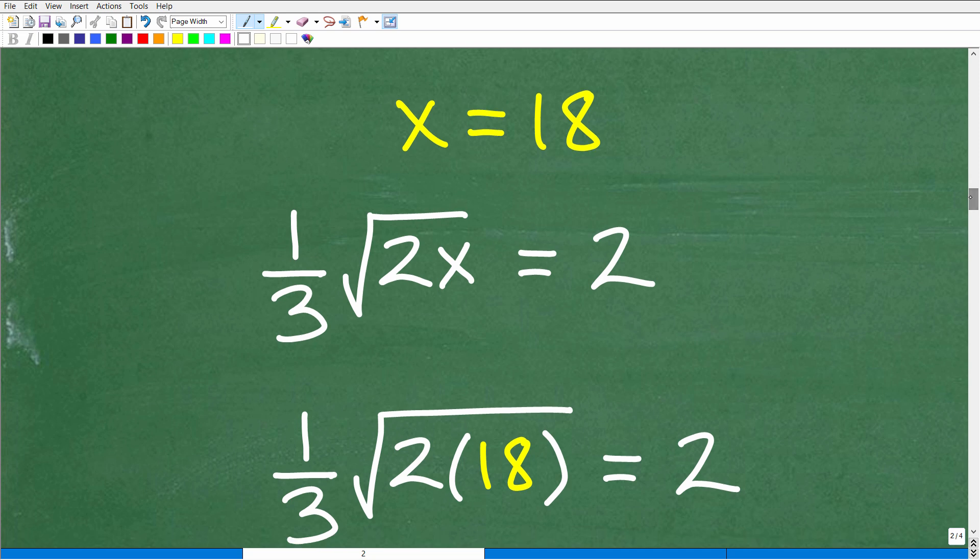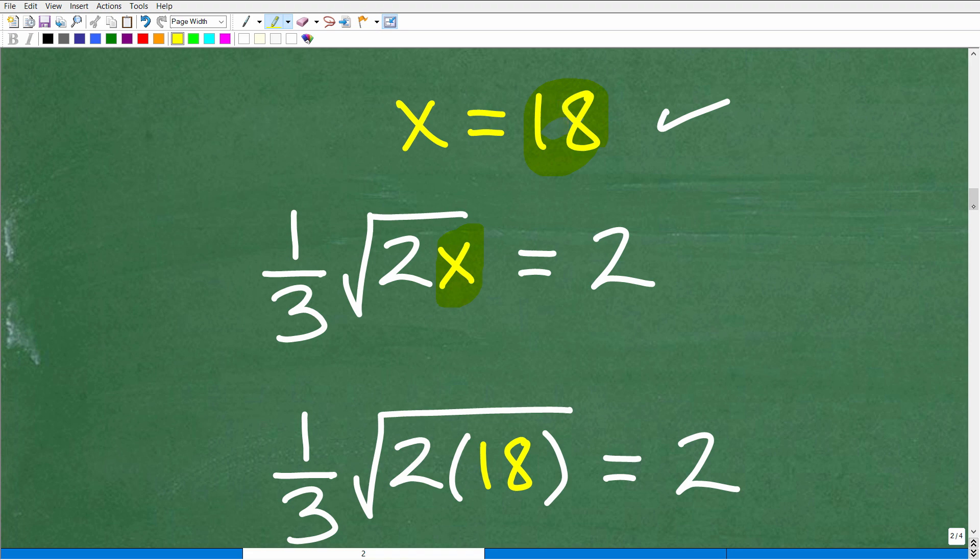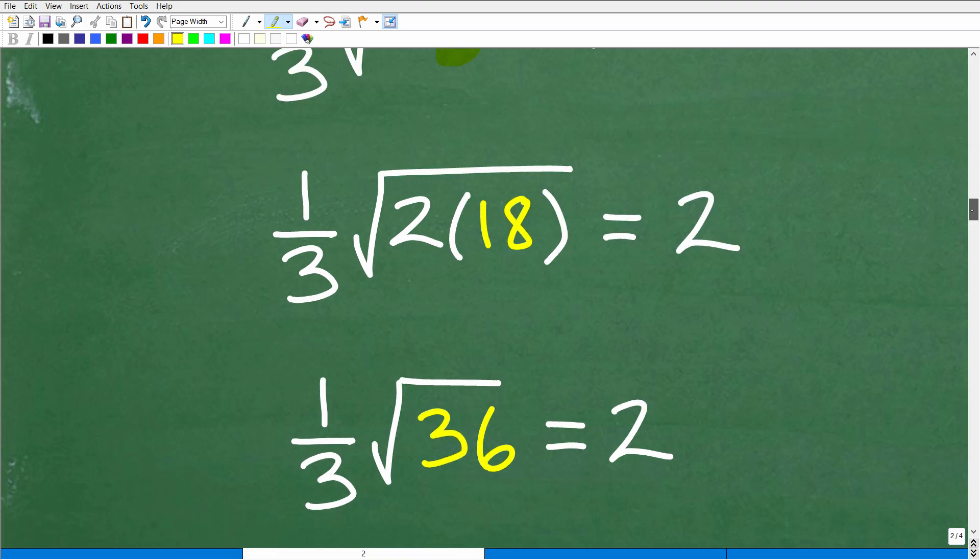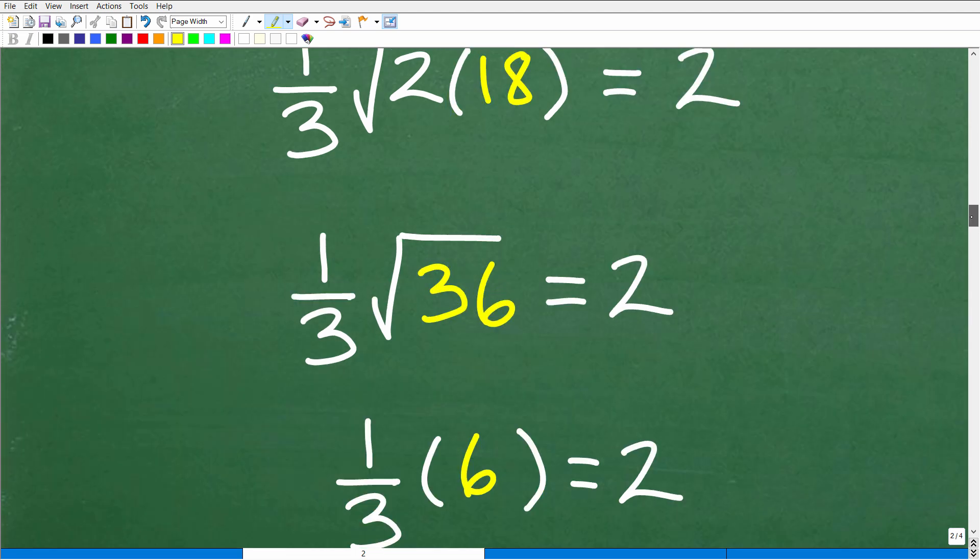So let's go ahead and do that right now. We got x equals 18. Again, this is not an optional step. If you were in my algebra class and you gave me x equals 18 and you didn't show me this step here, I would take some points off your work and then you'd be very upset and say I don't like you anymore Mr. Math teacher, I want to switch teachers. Anyways, x equals 18, this is what we think. So we're going to replace this x with 18 and see how this works out. Replacing this x with 18, we have one-third times the square root of 2 times 18 equals 2.